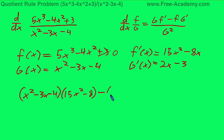Minus parentheses f, 5x to the third minus 4x squared plus 3 times g prime, 2x minus 3.